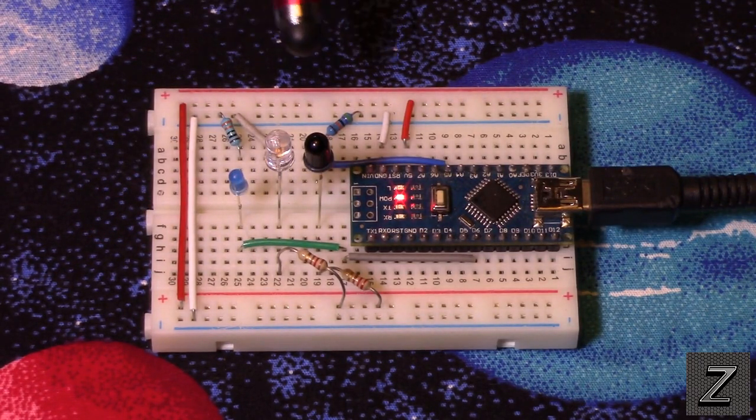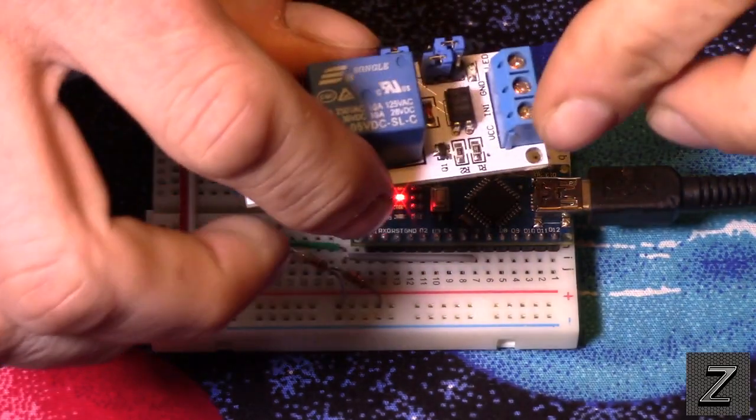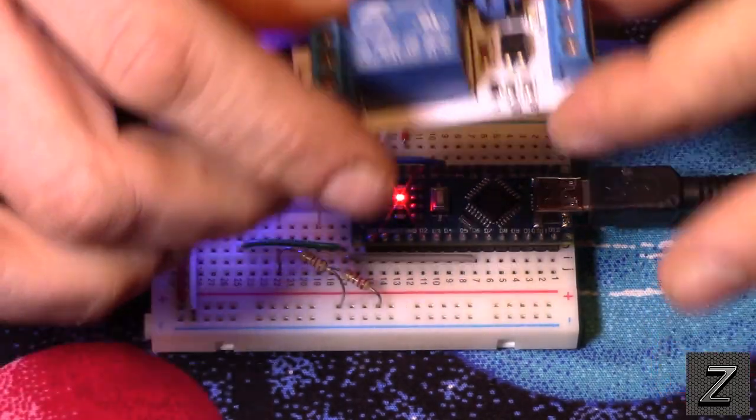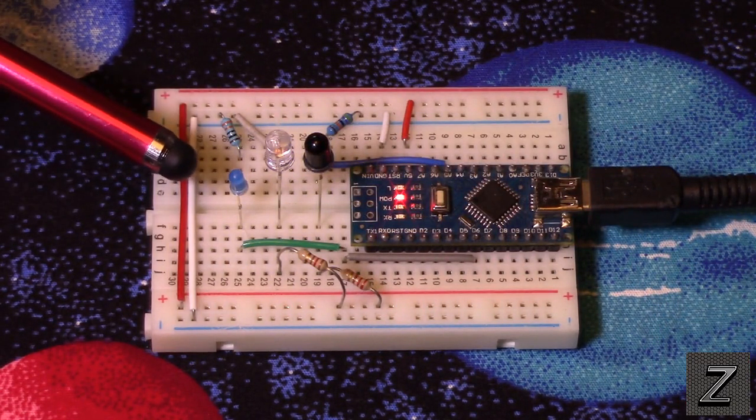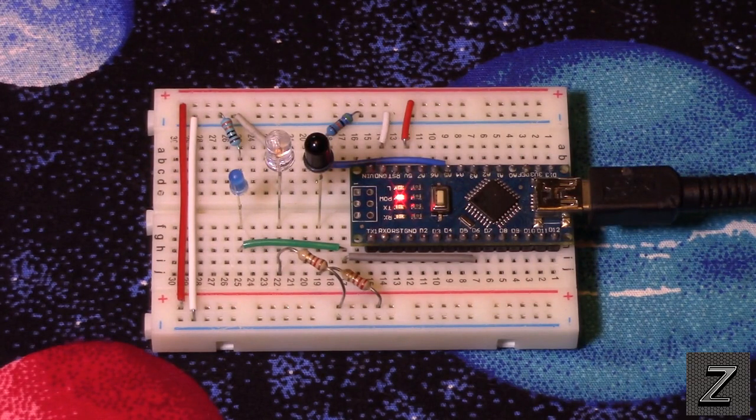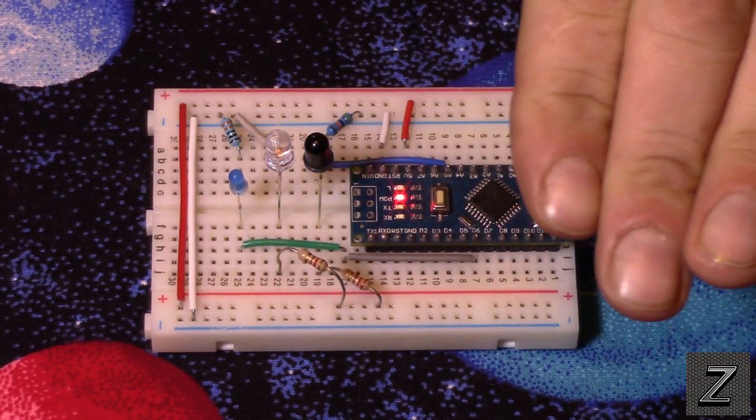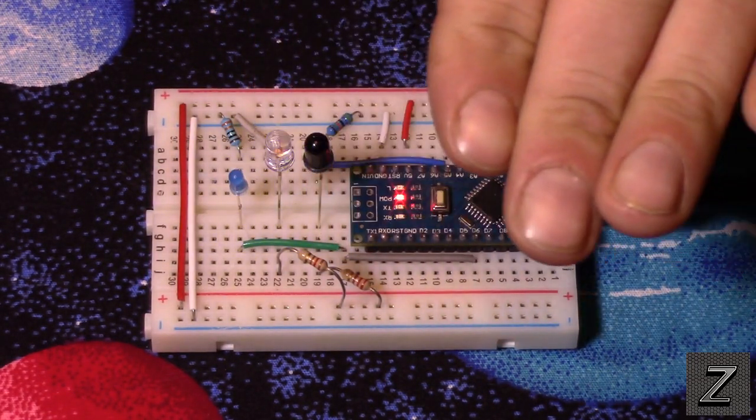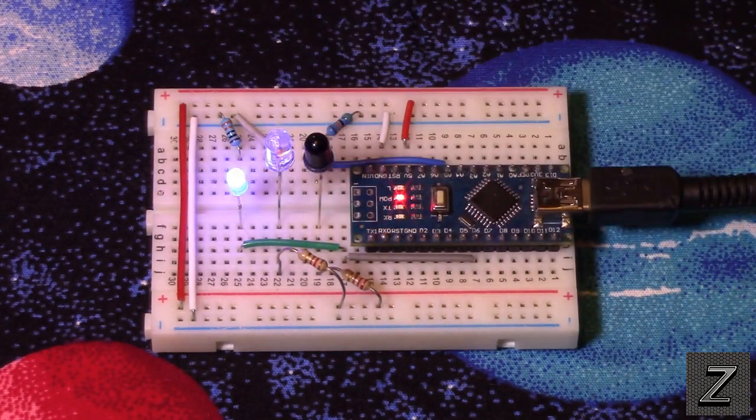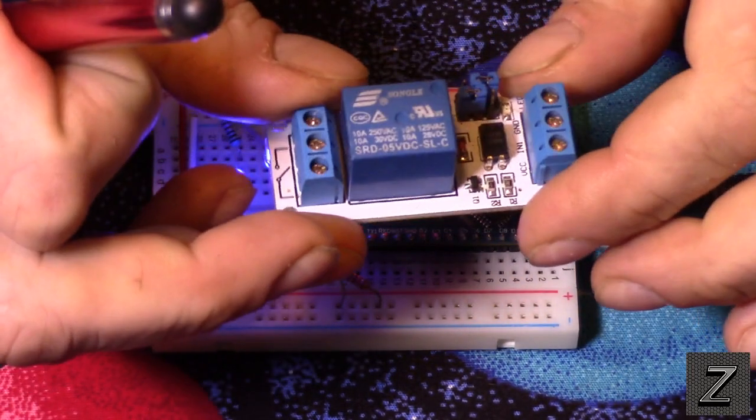Normally you would set this up to control a relay like this, but for demonstration purposes, I have substituted the relay with an LED so you can see it working. As you can see, when I move my hand over it, it detects the motion and turns the LED on where normally it would control a relay.